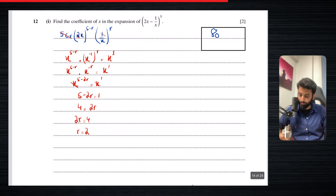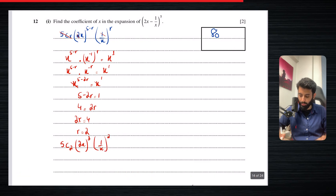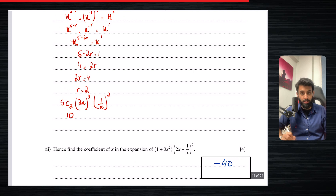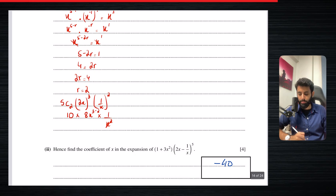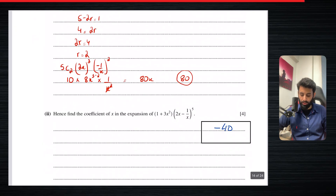Now r = 2 is the value we plug in to find the coefficient of x. So 5C2 · (2x)^(5−2) · (1/x)^2, which is 5C2 · (2x)^3 · (1/x)^2. 5C2 is 10, (2x)^3 is 8x³, times 1/x². x² cancels, reducing x³ to x^1. There's a minus sign here, but 10 × 8 = 80, so the final answer — the coefficient of x — is 80.